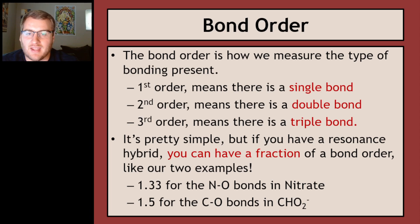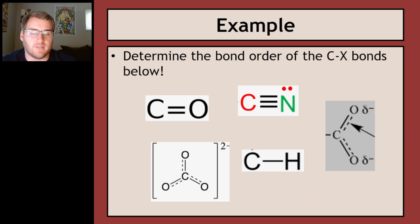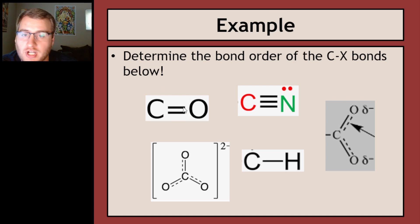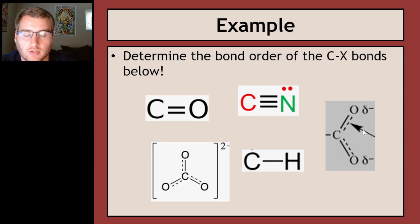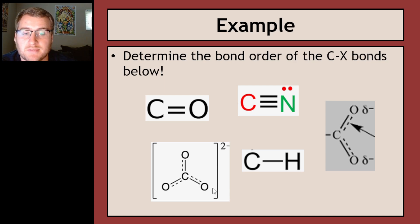For five bond order examples: the simple ones without dashed lines are easy. A C=O double bond is bond order 2. A triple bond is bond order 3. A C-H single bond is bond order 1. For resonance hybrids, the right example has a double bond split between two pairs — bond order 1.5. The left example is a carbonate ion with a double bond split among three equal groups — bond order 1.33.